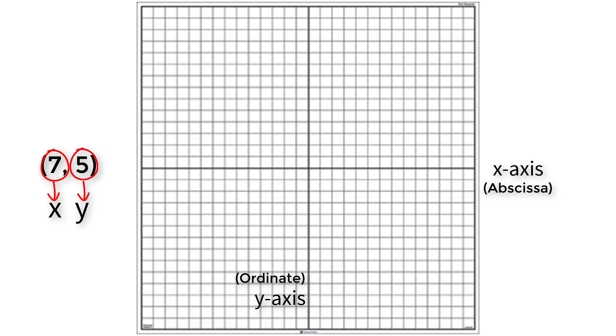Now, on our coordinate plane, we have to start at the origin, which is 0, 0, and move 7 units to the right of the x-axis. After that, we have to go back to the origin and go 5 units up the y-axis.